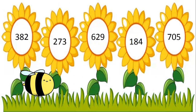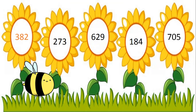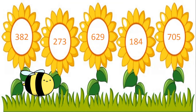My dear kids, can you see the numbers on flowers? Now we have to find out the greatest number. Let us read the numbers: 382, 273, 629, 184, and 705. To find out the greatest number, let us see the digits in the hundreds place first.